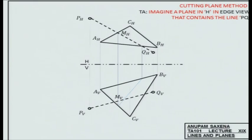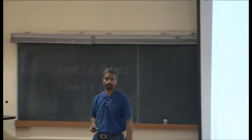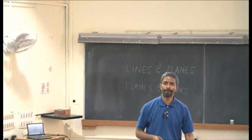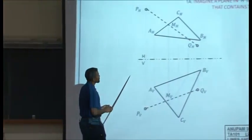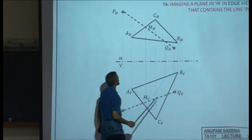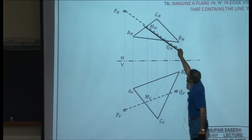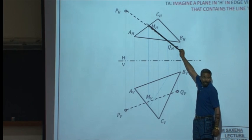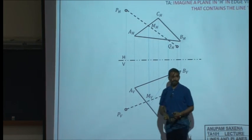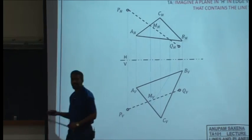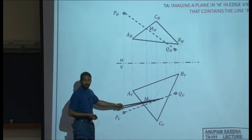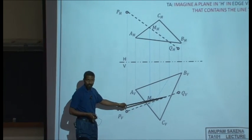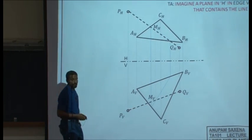What would this line correspond to? This line would correspond to the line of intersection between ABC and the imaginary plane in the edge view. This line has to be intersecting with the corresponding projection of line PQ, and that would be the point of intersection.